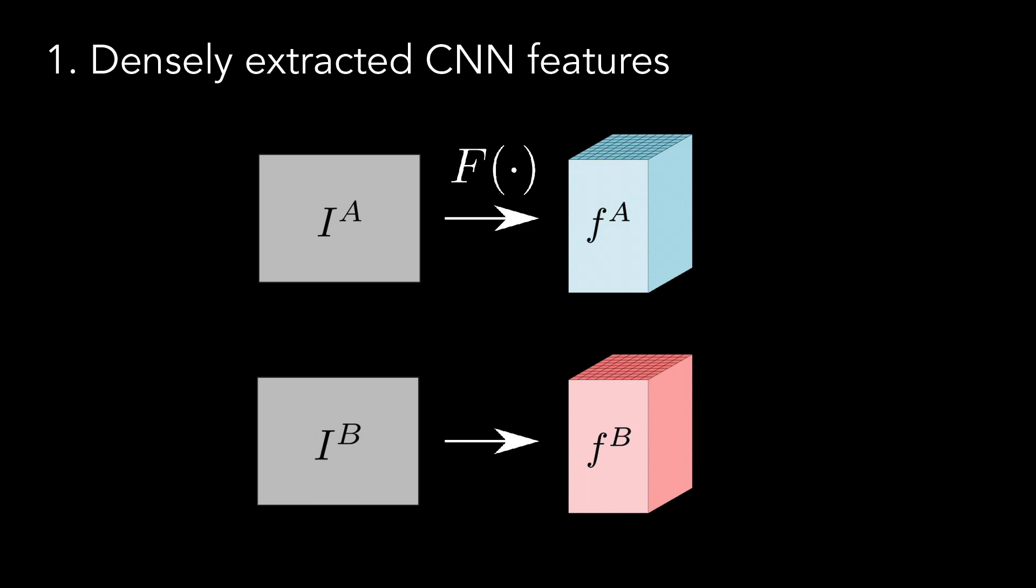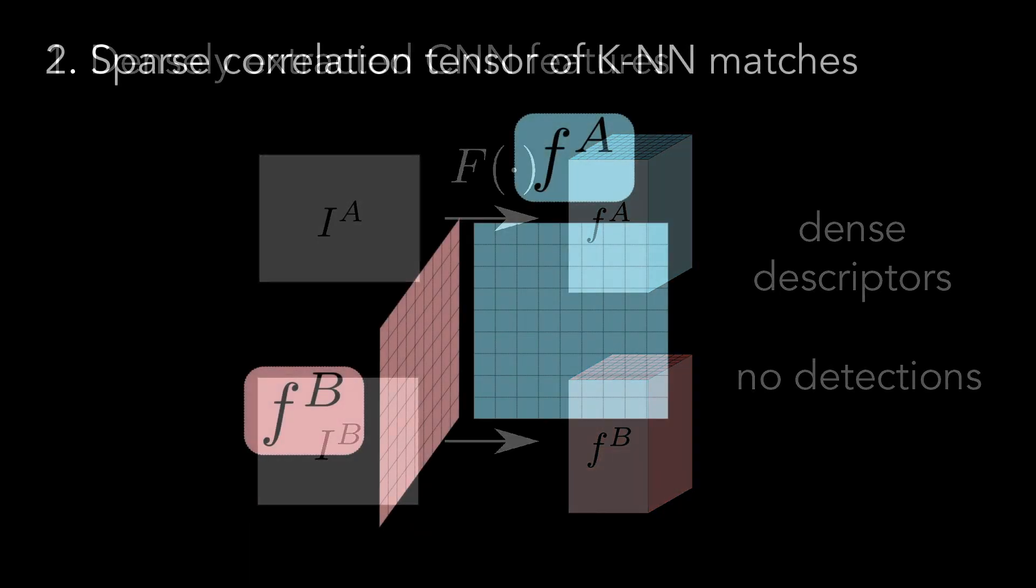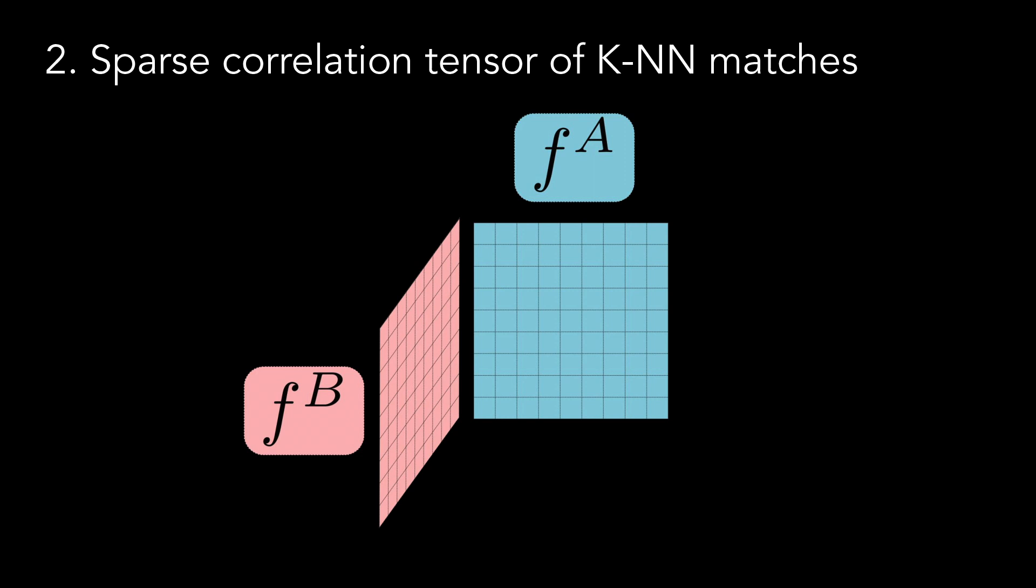In the first stage, a feature extraction CNN is used to densely extract features for both input images. Note that there is no feature detection step, thus circumventing the issue of low detection repeatability. In the second stage, we compute tentative matches by performing k-nearest neighbor search on the densely extracted features.